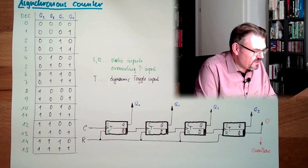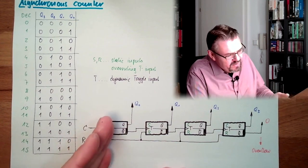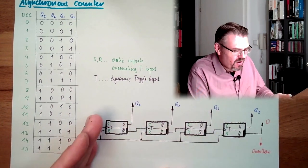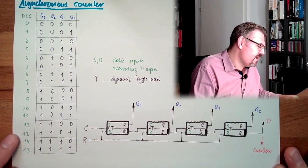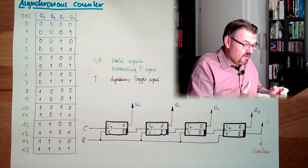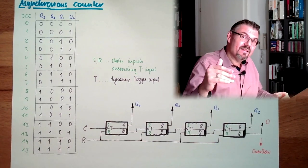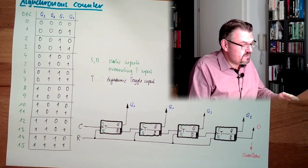So why is this called asynchronous? Asynchronous is called because one element is switching the next. Not all elements are switching at the same time. What this implies, we will hear in a later video, but this is how this is working.